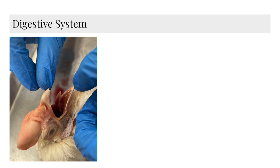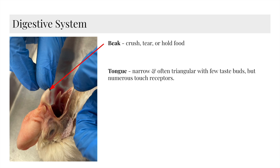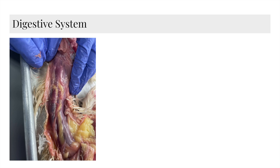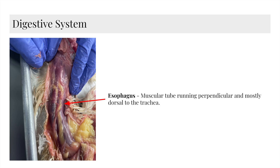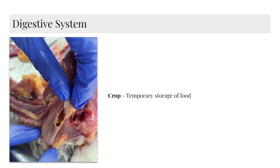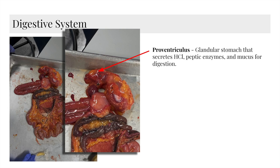Moving on, we have the digestive system. Here we have the beak that crushes, tears, or holds food. We have the tongue, and it's narrow and often triangular with few taste buds but numerous touch receptors. Here's the esophagus — a muscular tube remaining perpendicular and mostly dorsal to the trachea. Here's the crop, and it's a temporary storage of food. Here we have the proventriculus — a glandular stomach that secretes HCL, peptic enzymes, and mucus for digestion.